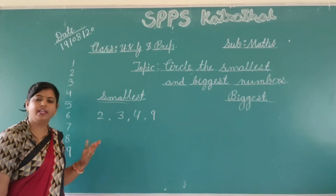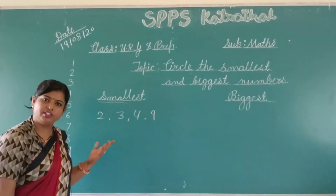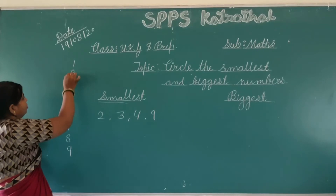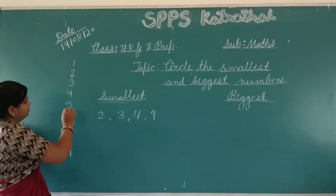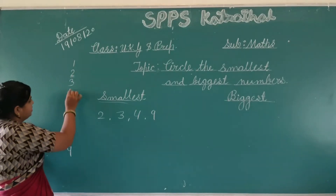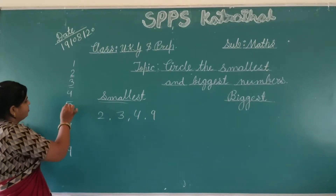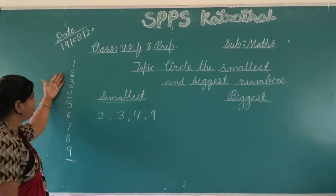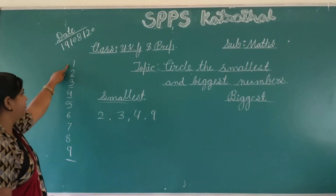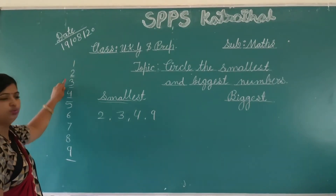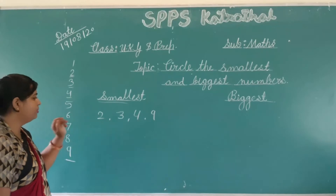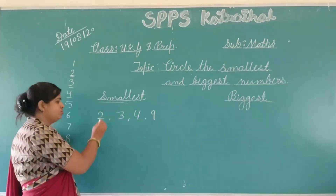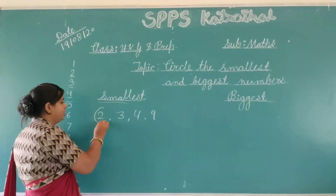We learn the smallest number. Now, 2, 3, 4 and 9. We learn the smallest number. It is 1, 2.